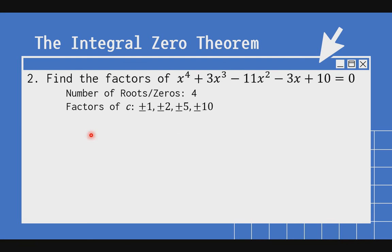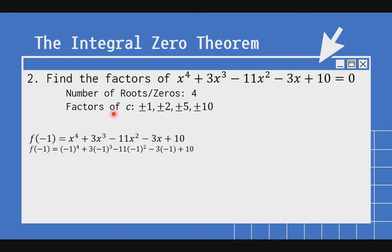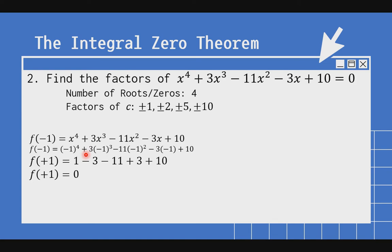So next: dito naman, kunin natin yung factors ng 10. Meron tayong 4 na set ng numbers: 1, 2, 5, 10 — kasi pwede mong i-divide ang 10 sa mga number na ito. Hahanapan natin yung 4 na factor. Unang try natin is yung negative 1. Kapag sinubstitute ba natin yung negative 1, magiging 0? So: negative 1 raised to 4 is positive 1. Negative 1 raised to 3 is negative 1; times positive 3 is negative 3. Negative 1 raised to 2 is positive 1; times negative 11 is negative 11. Negative 3 times negative 1 is positive 3, plus 10. Pag pinagsama natin, we will get 0.